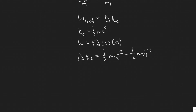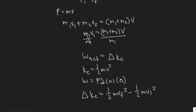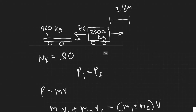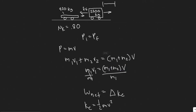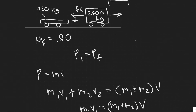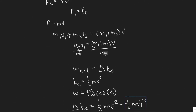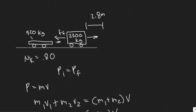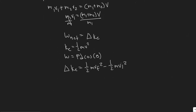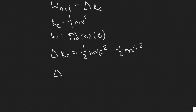Starting with the change in kinetic energy: it equals one half Mv_final squared minus one half Mv_initial squared. The only thing changing is the velocity, so you do V_final minus V_initial. V_initial is the speed right at the collision — that is this V. V_final is where the cars stop, so V_final is zero. The change in kinetic energy is therefore just negative one half Mv_initial squared.